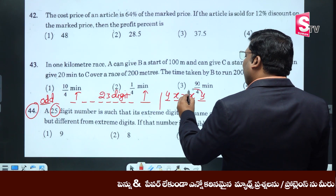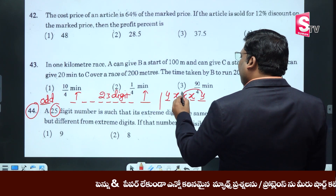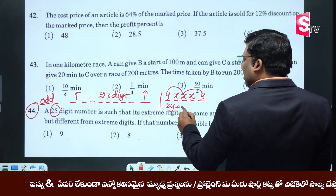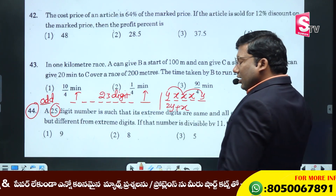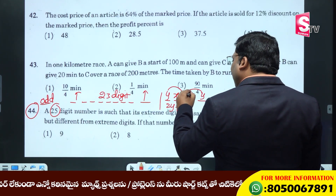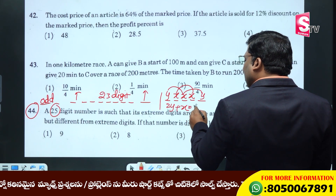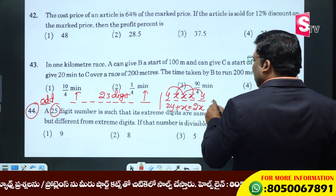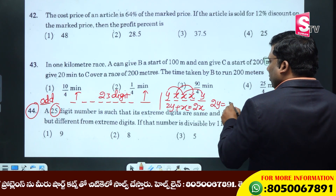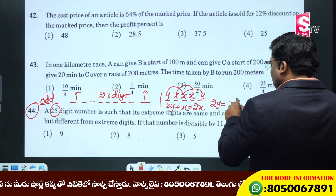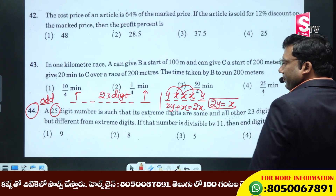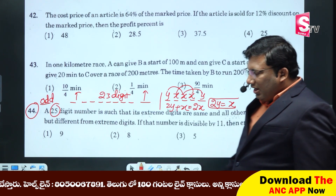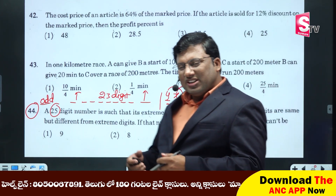Divisibility rule of 11: 2y plus x. Sum of odd places. Sum of even places is 20. Therefore, 2y equals x. The number has 25 digits.